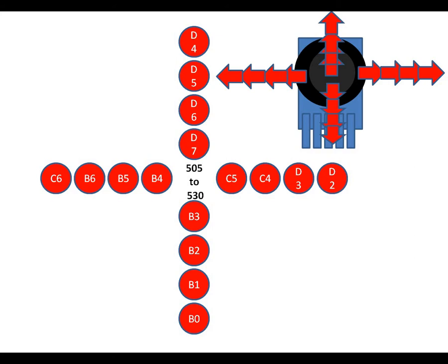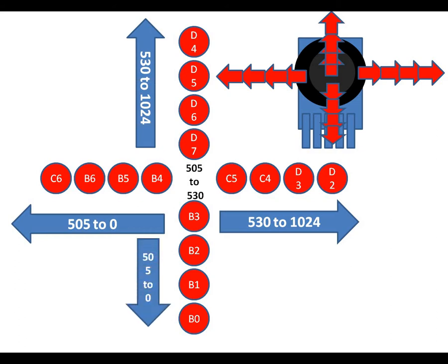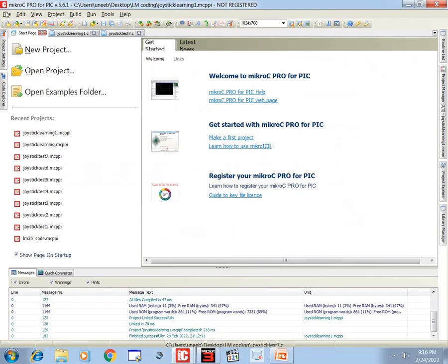This is a simple but very effective project. At rest, both X and Y ADC values lie between 505 to 530, so in the programming we force all LEDs to be off. When we go to the right, the value increases from 532 to 1024. To the left it decreases from 505 down to 0. In this way we can make four steps to program the LEDs. Similarly when we go top: 532 to 1024; bottom: 505 to 0.